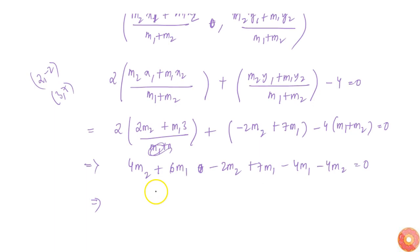The 4m2 terms get cancelled. 6 + 7 is 13, 13 - 4 is 9, so 9m1 = 2m2.